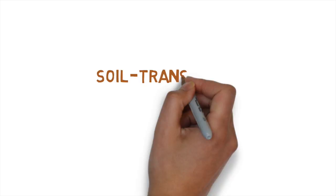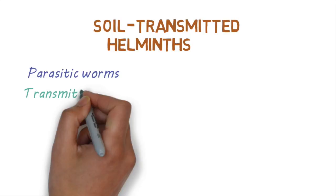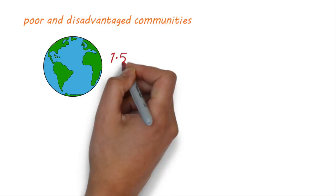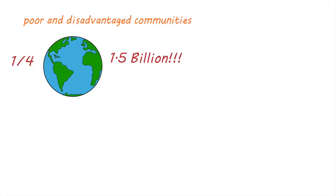Hello and welcome to this video where we'll be taking a look at soil-transmitted helminths. Like the name suggests, soil-transmitted helminths are a group of parasitic worms, or helminths, that are transmitted through soil that's been contaminated with their eggs. These infections are very common and mainly affect poor and disadvantaged communities around the world. It's estimated that over 1.5 billion people in the world are infected with these worms — that's almost a quarter of the world's population.